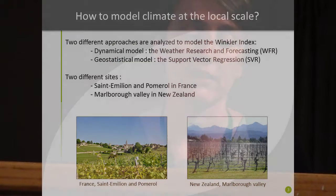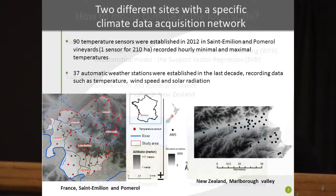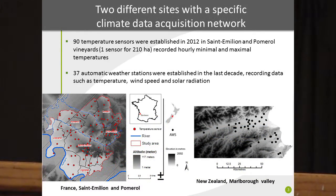The question is: how do we model climate at the local scale? In this study, we will use two different approaches to model Winkler index: a dynamical model, the Weather Research and Forecasting (WRF), and a statistical model, the supervector regression. We applied both models on two different sites: Saint-Emilion and Pomerol in France, and the Marlborough Valley in New Zealand.